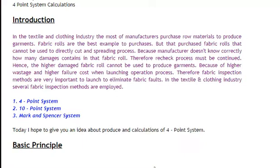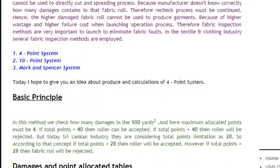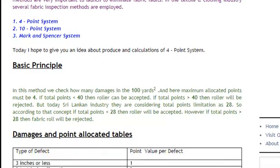Therefore, fabric inspection methods are very important to eliminate fabric faults. In the textile and clothing industry, several fabric inspection methods are employed: the first one is the four-point system, the second one is the 10-point system, and the third one is the Marks and Spencer system. Today, I hope to give you an idea about the procedure and calculation of the four-point system.